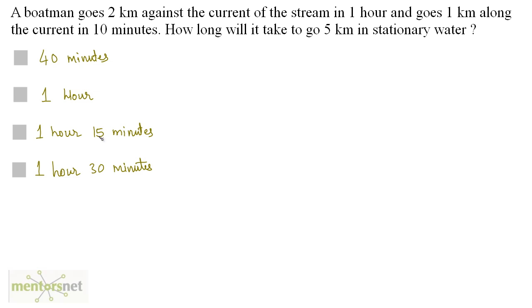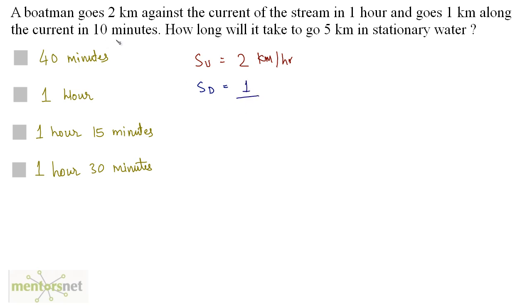A boatman goes 2 kilometers against the current of the stream in 1 hour and goes 1 kilometer along the current in 10 minutes. How long will it take to go 5 kilometers in stationary water? So he goes 2 kilometers against the current in 1 hour, so the upstream speed is equal to 2 kilometers by 1 hour, that's 2 kilometers per hour. And he goes 1 kilometer along the current in 10 minutes, so the downstream speed is equal to the distance 1 kilometer upon the time, which is given in minutes.